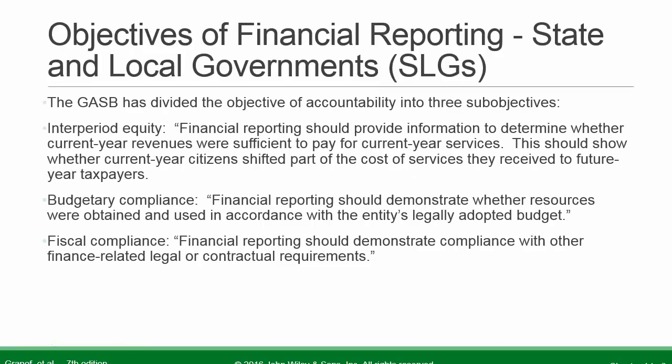Continuing with the objectives of financial reporting for state and local governments, the GASB has divided the objective of accountability into three sub-objectives. The first is interperiod equity — financial reporting should provide information to determine whether current year revenues were sufficient to pay for current year services, and whether current year citizens shifted part of the cost to future year taxpayers. Second, budgetary compliance — financial reporting should demonstrate whether resources were obtained and used in accordance with the entity's legally adopted budget. Third, fiscal compliance — financial reporting should demonstrate compliance with other finance-related legal or contractual requirements.